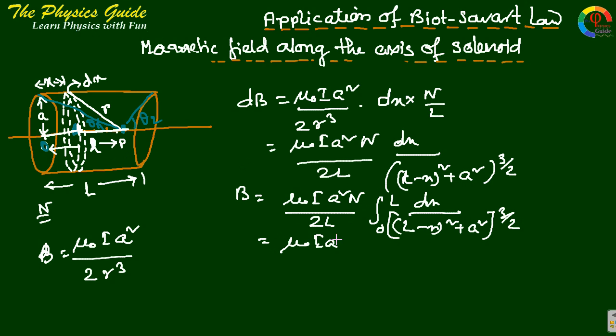So after integrating we get mu0 I A squared N by 2L times L minus X by root over L minus X squared plus A squared.